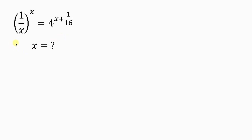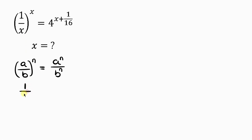Our first step is to apply the law of indices to the left hand side. The law of indices says when I have (a/b)^n, this is the same as a^n over b^n. But since we have 1 on top, the law also says (1/b)^n is the same as 1 over b^n, because 1 raised to any power is still 1.